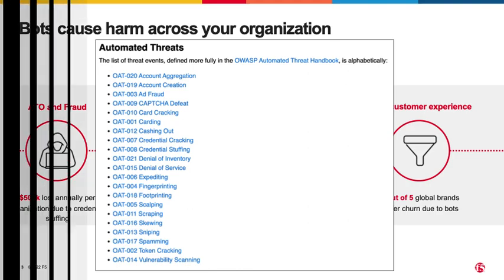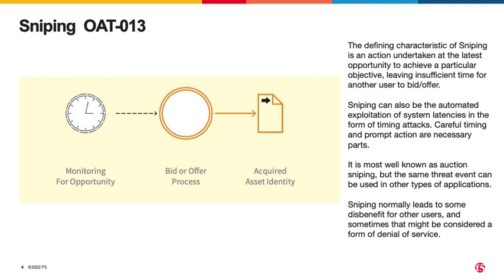Today, I wanted to talk about OWASP Automated Threat number 13, sniping. For those not familiar with this concept, also known as auction sniping or bid sniping, this takes the form of an automated tool monitoring and placing a bid on an auction-type site in the last milliseconds to win that bid. This places normal bidders at a disadvantage, almost always losing the bidding process. A quick Google search, just looking at tools available for one particular website, had over $200,000 in returns on this topic. These results were for hosted services and tools alike to take advantage of sniping.